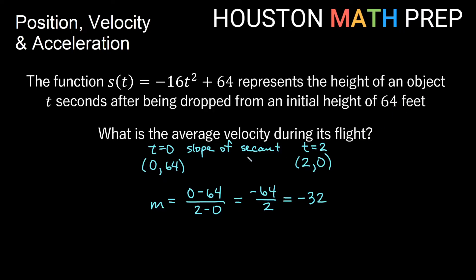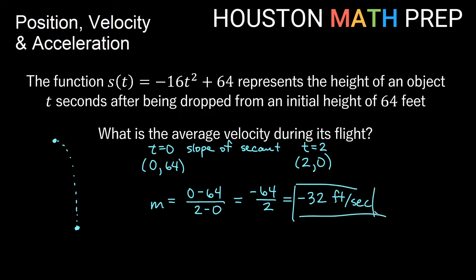The velocity is negative because our position is decreasing. We started at 64 feet in the air, and as time passed the object fell down to the ground. Because the position change is negative, the average velocity is negative.